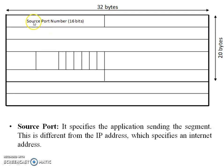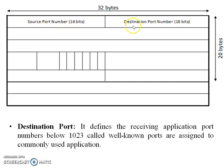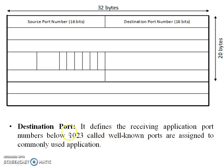Whenever a sender sends data using the HTTP protocol, the source port number will be 80. The second field is the destination port number, which is also 16 bits. Whenever a destination receives data from HTTP, it is also set to 80. There are 1023 well-known ports in total.